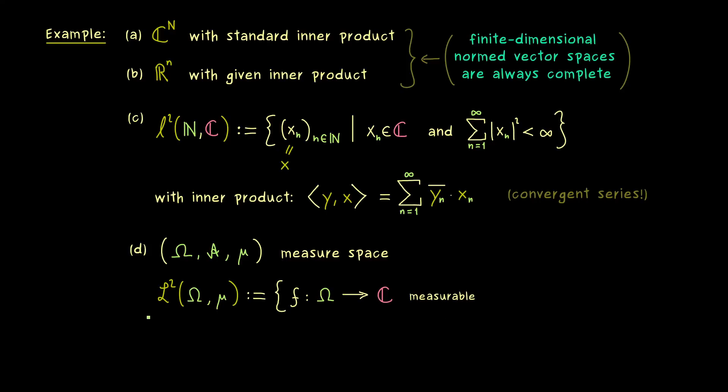And the elements from this vector space are given as functions from Ω into C. So we have a function space where we also have two additional restrictions. Namely, the functions should be measurable and square integrable. So if you write down the general Lebesgue integral over Ω, and you put in the absolute value of f squared, then what comes out is again a finite number, so not infinity.